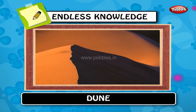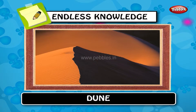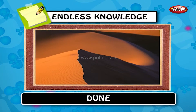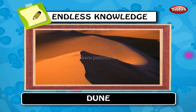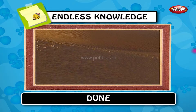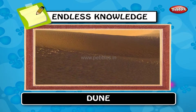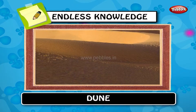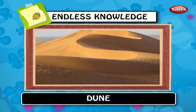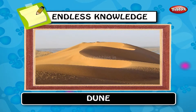Dune. A dune is a hill of sand built by aeolian processes. Dunes are subject to different forms and sizes based on their interaction with the wind.